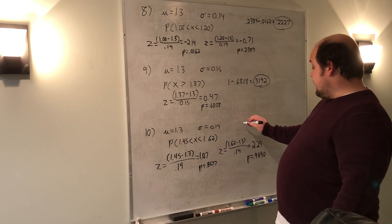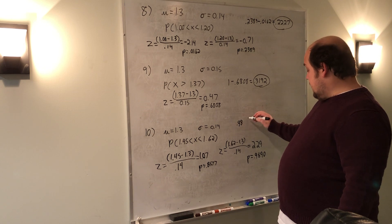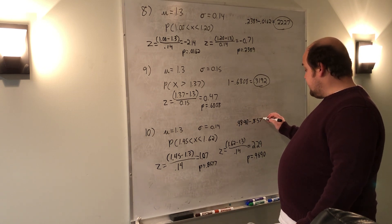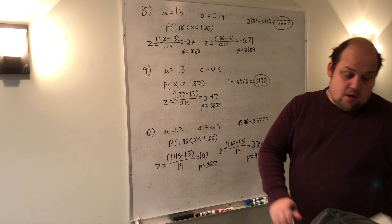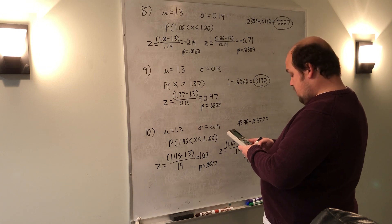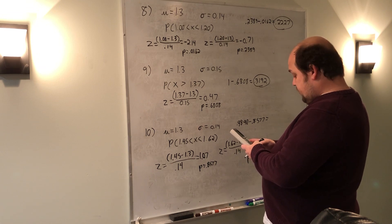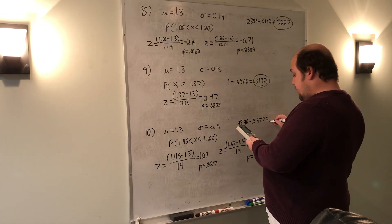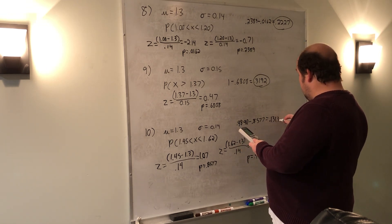To get my final answer, I take larger p-value, 0.9890, minus smaller p-value, 0.8577. When I put that into my calculator, 0.9890 minus 0.8577, gives me my final answer of 0.1313.